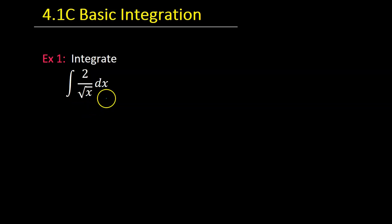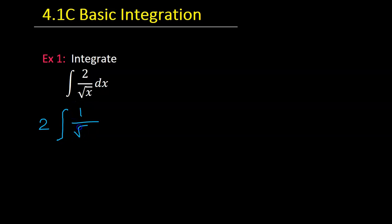Sometimes I will use the word integrate, but sometimes I will say find the anti-derivative — those mean exactly the same thing. Let's rewrite this problem. The constant can be pulled outside of the integral, so I'm going to take this 2 and move it out to the front, leaving us with 1 over the square root of x dx.